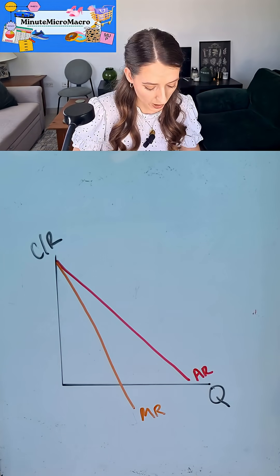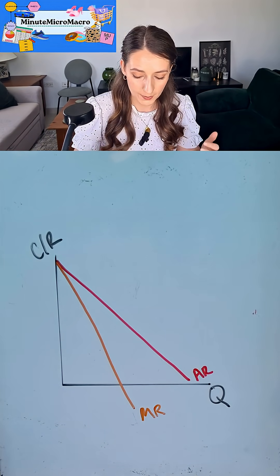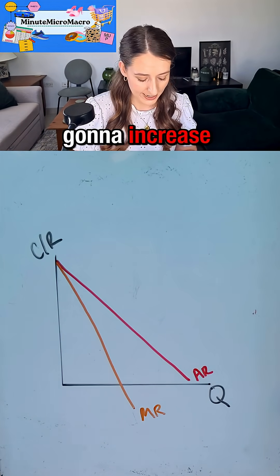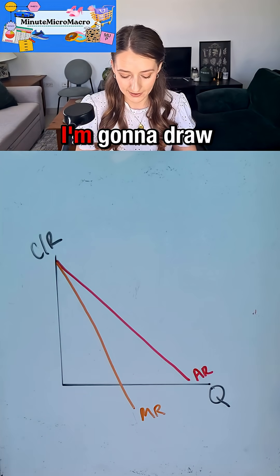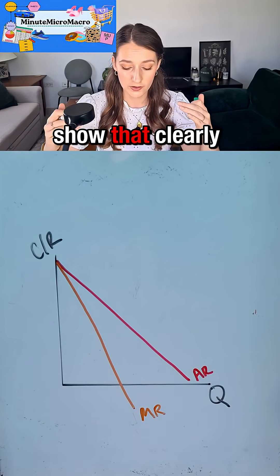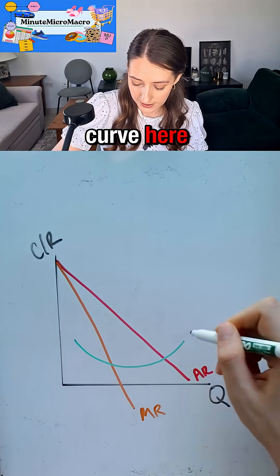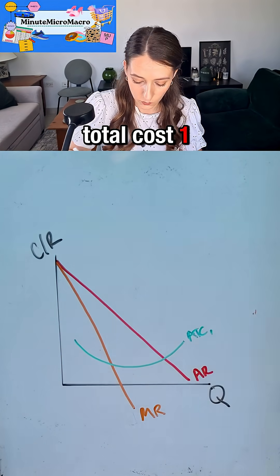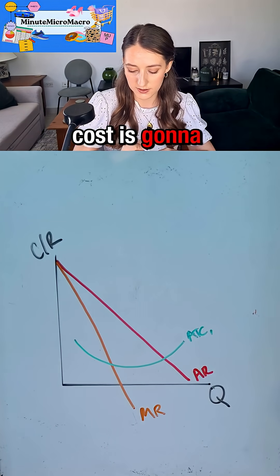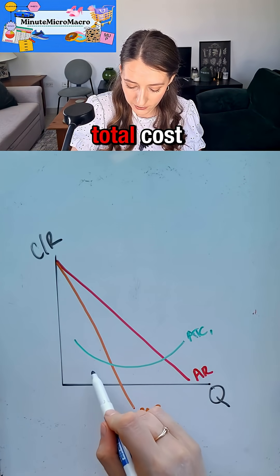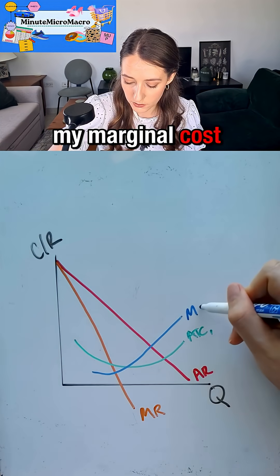I'm going to be applying a tax, which means that my costs are going to increase. So planning ahead, I'm going to draw my costs quite low so I can show that clearly in my diagram. I'm going to have my cost curve here as my average total cost one, and my marginal cost is going to cut through the minimum point of my average total cost—my marginal cost one.